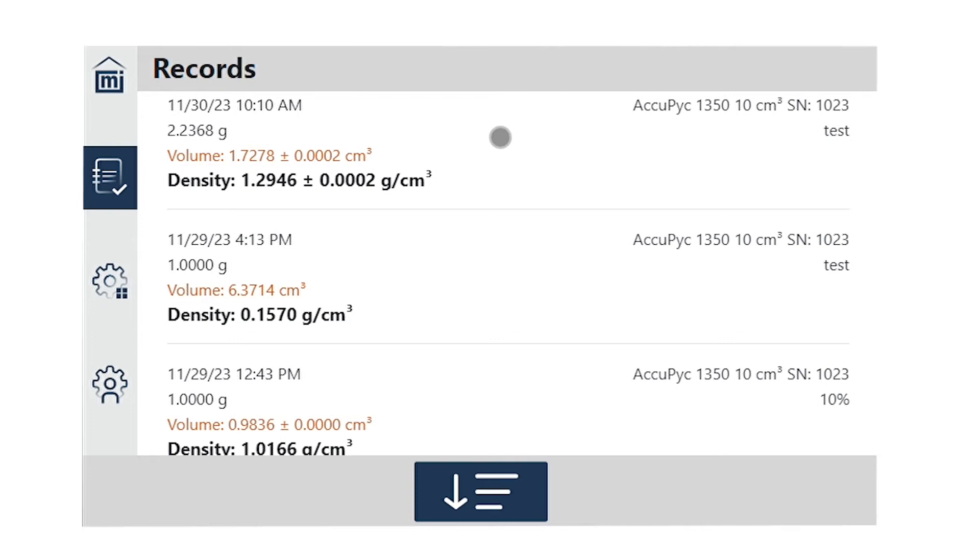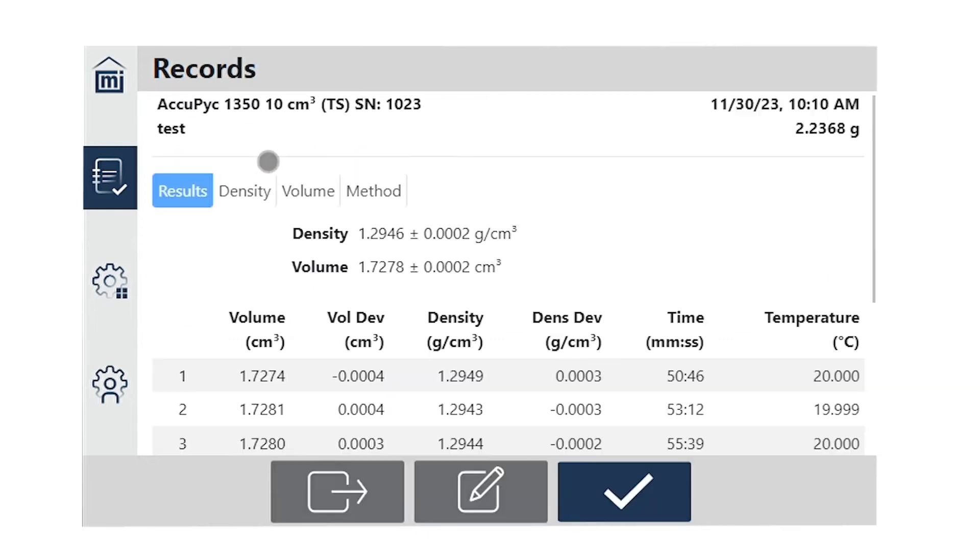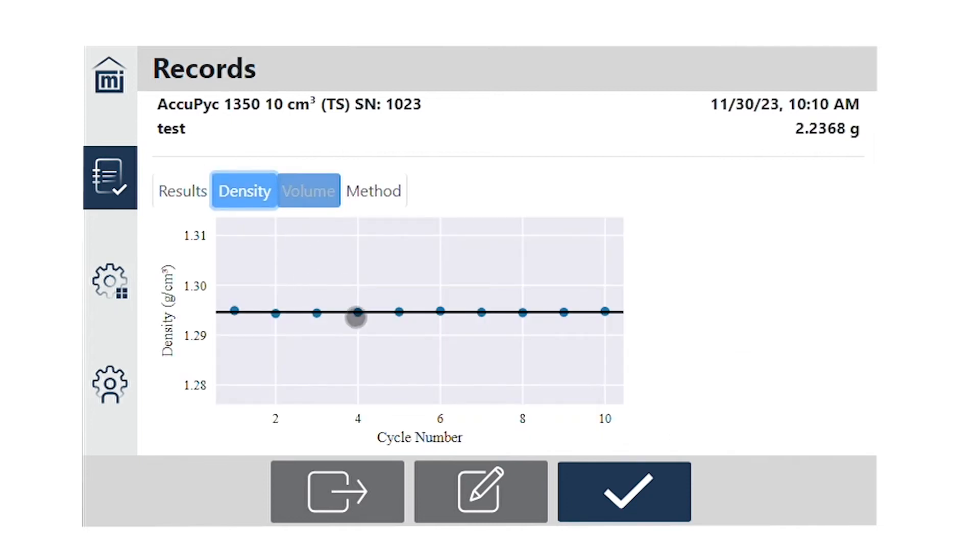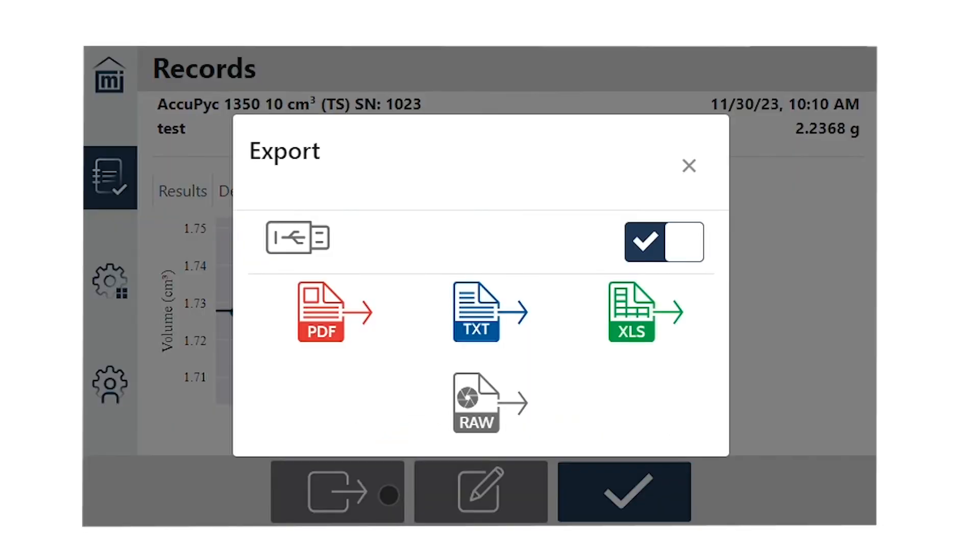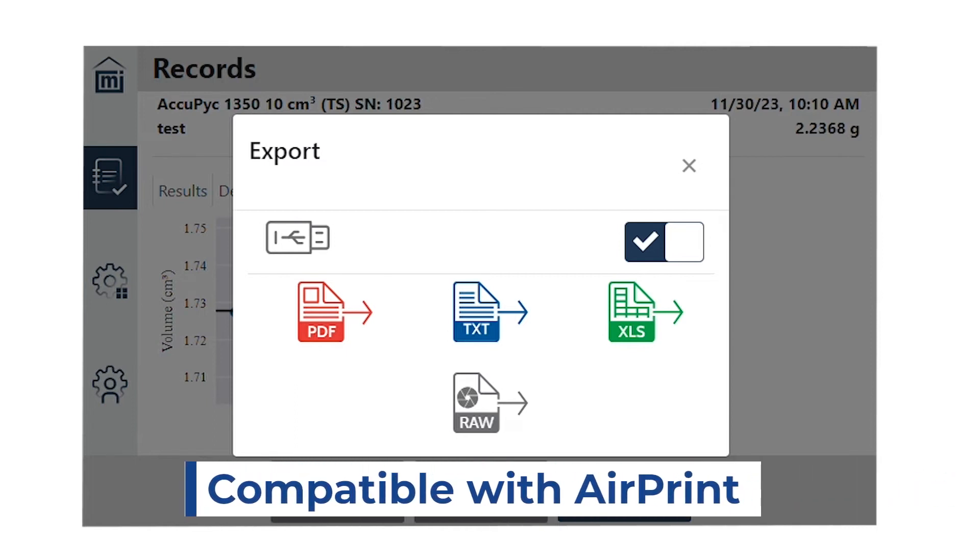Let's look at the data from what we just ran. We can see the data in both tabular and plotted forms. Want to export the data? You can export an Excel sheet, PDF, or print directly to a printer. The AccuPIC is compatible with any AirPrint-compatible printer.